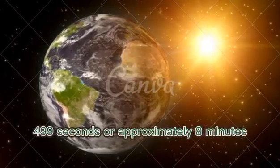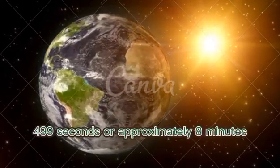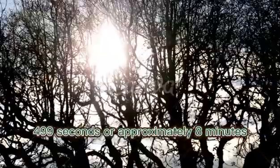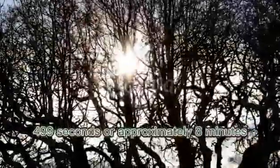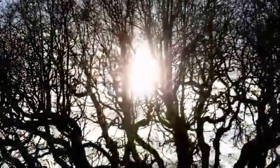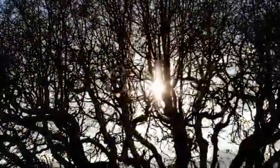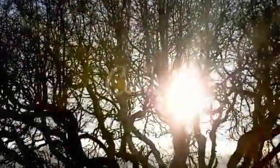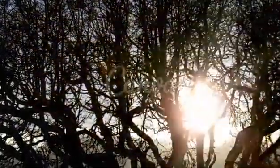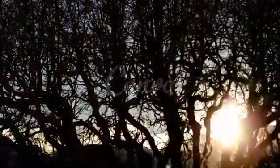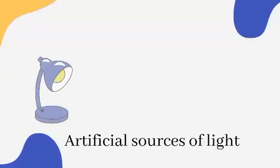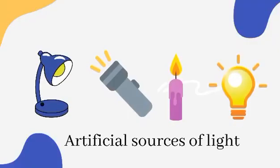It takes 499 seconds, or approximately 8 minutes, for light from the sun to travel to the Earth. Other sources such as lamps, candles, and bulbs are examples of artificial sources of light.